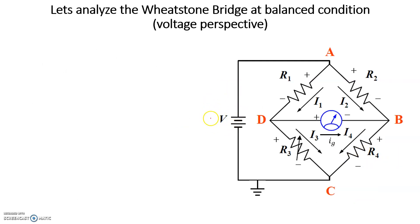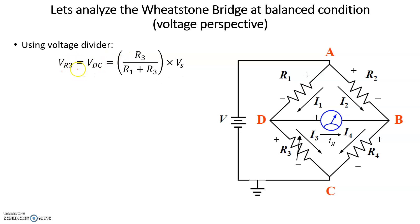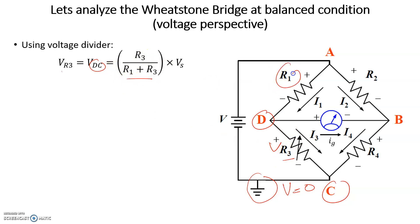Let's analyze the balance condition and derive the expression to calculate the unknown resistance. We'll use a voltage divider approach. Assuming ground potential is at node C, the voltage across R3 — between node D and C — equals R3 divided by (R1 + R3), multiplied by the source voltage Vs. Similarly, we can write the same expression for the voltage across R4.